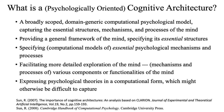To me, a cognitive architecture is a broadly scoped, domain-generic, computational, psychological model, capturing the essential structures, mechanisms, and processes of the mind. It provides a general framework of the mind, specifying its essential structures, within which it also specifies essential psychological mechanisms and processes. It facilitates more detailed exploration of the mind, exploring various components and functionality. It represents psychological theories in a computational form, which might otherwise be difficult to capture. Some may argue that the complexity of the mind cannot be captured otherwise.